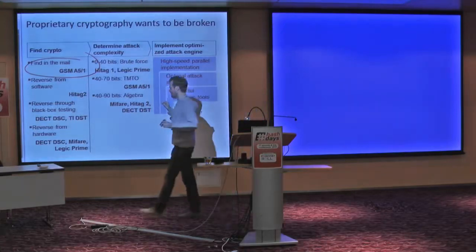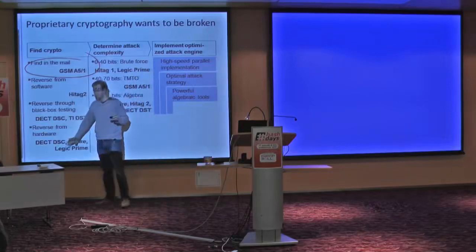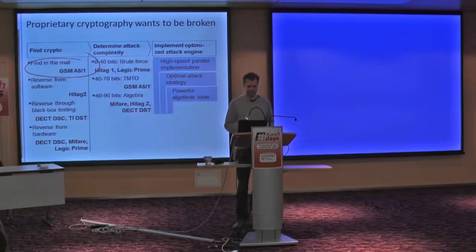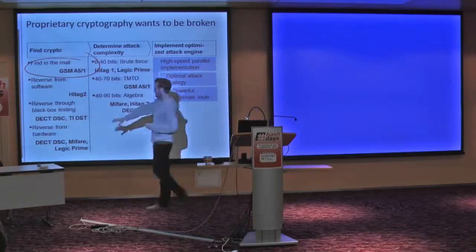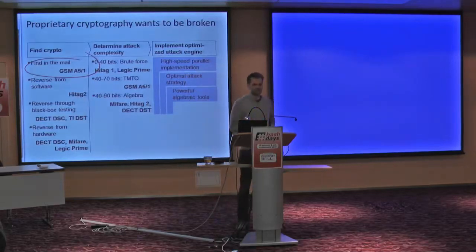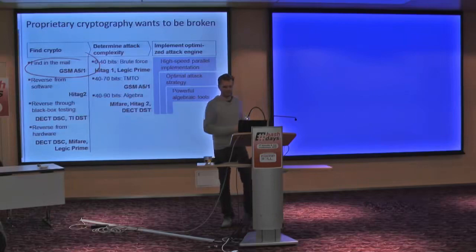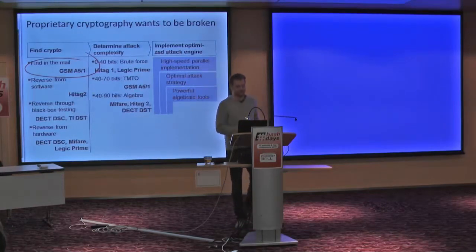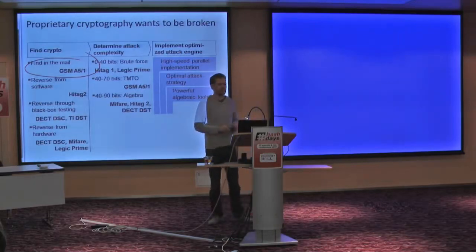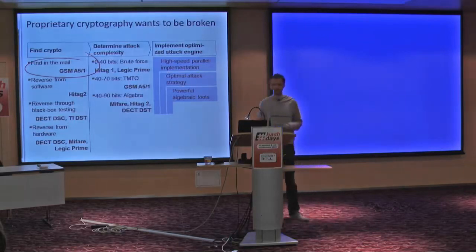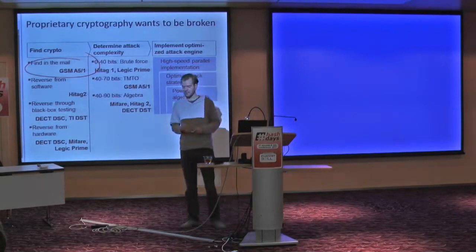Just to make the point that no matter how well protected or deeply embedded in hardware a cryptographic function is, there's always a way of getting to it. And if you have to count transistors, then you count transistors. Following that, given a cipher — chances are a proprietary LFSR-based stream cipher, which seems to be popular across industry for several decades — you want to first estimate what type of attack could work against it. There are trivial ciphers with small key sizes, say up to 40 bits.